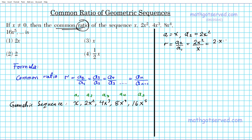Let's break this down: 2x squared is 2 times x times x, divided by x. We can cancel one x from the numerator and denominator, leaving us with 2x. So our common ratio is 2x. That means if you repeatedly multiply each term by 2x, you will get all the terms of this geometric sequence.